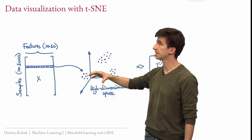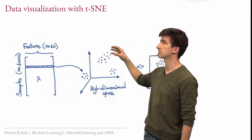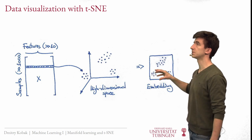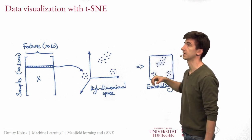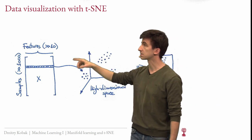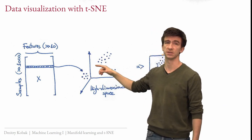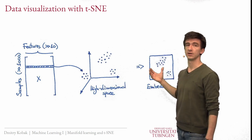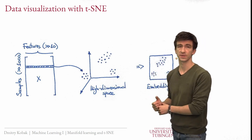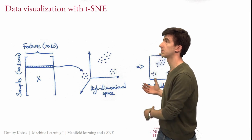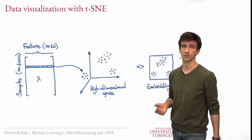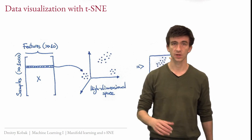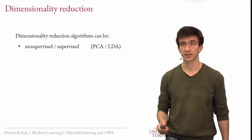The task is to embed high dimensional points into two dimensions to preserve some interesting structure. For example, if the high dimensional data have three well-separated clusters, we would ideally want to see three well-separated clusters in the embedding. Ideally, if there are more complicated structures in the high dimensional data, we would like to see these in the embedding as well. Not everything can be preserved, but we would like to preserve as much interesting structure as possible. This is the task of T-SNE and today's lecture.